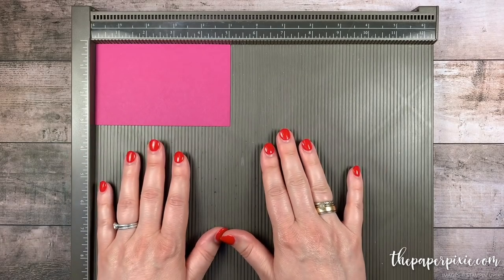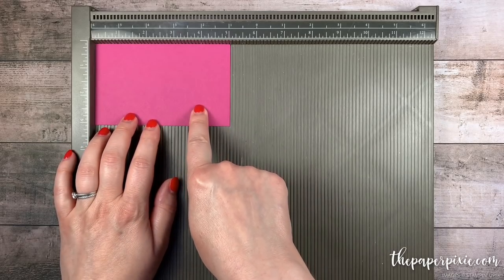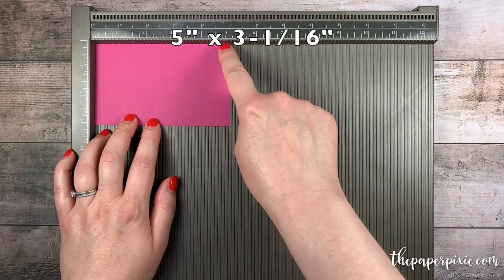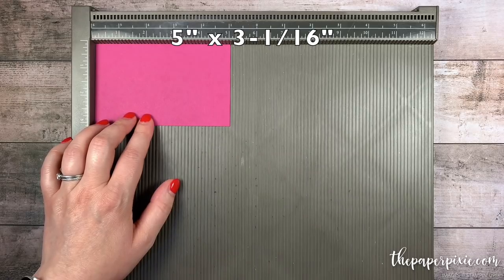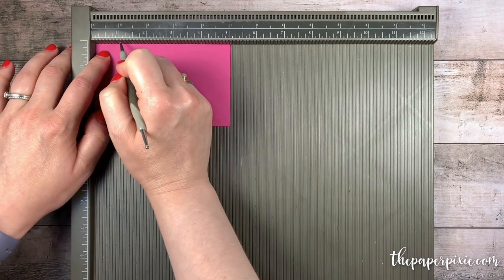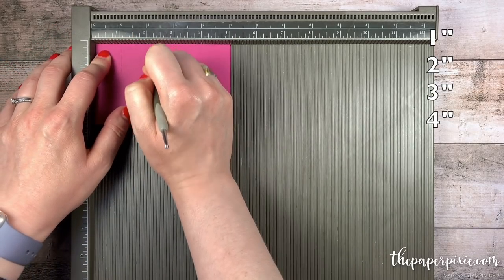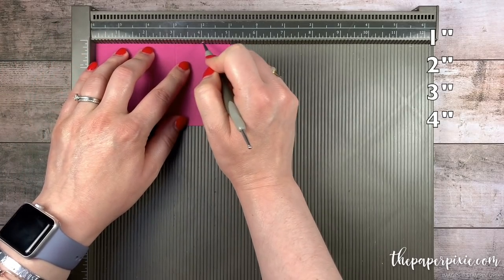We're gonna do the scoring on all the pieces first. So the first one we're gonna start with is Berry Burst. This piece measures five inches by three and a sixteenth and along the five inch side we're gonna score this at one, two, three and four.